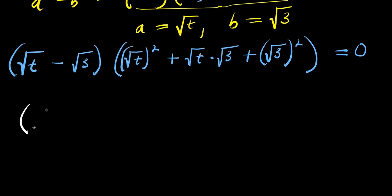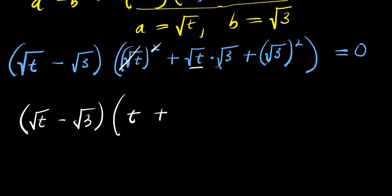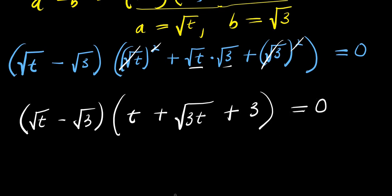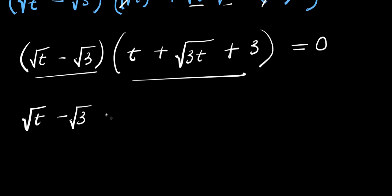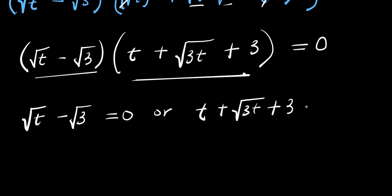Simplifying, I have (root t minus root 3) times: the square root squared eliminates the square, giving t; plus root t times root 3 gives square root of 3t; and root 3 squared gives 3. So this becomes (root t minus root 3)(t plus square root of 3t plus 3) equals 0. I can equate each factor to zero: root t minus root 3 equals 0, or t plus square root of 3t plus 3 equals 0.